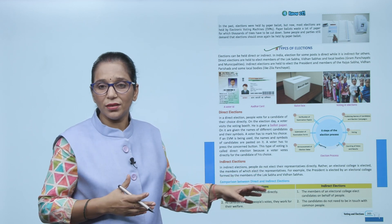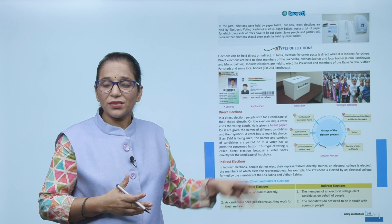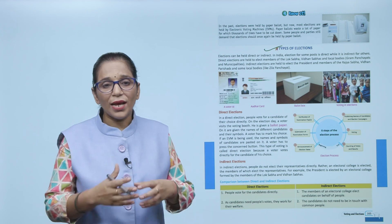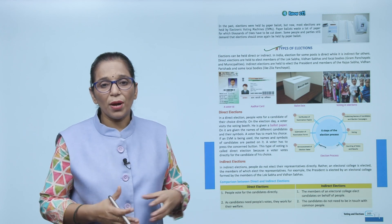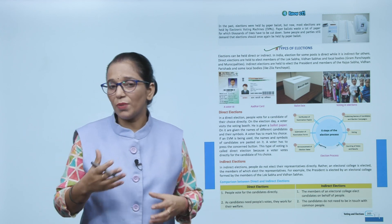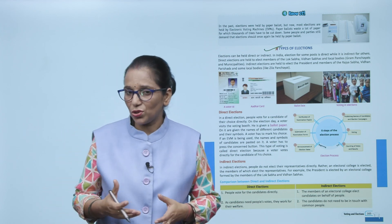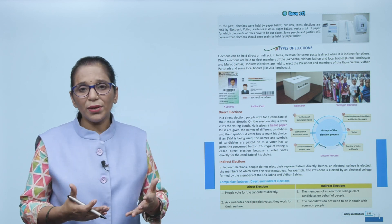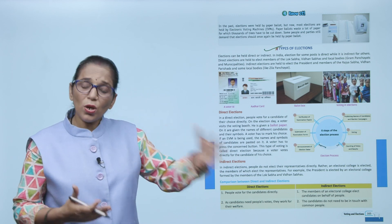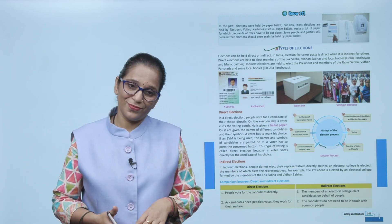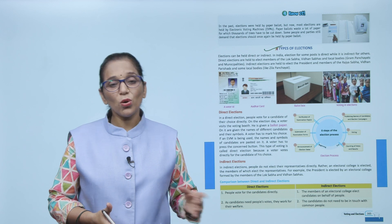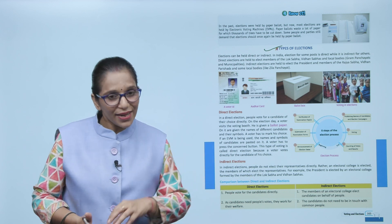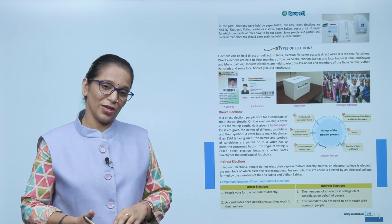The electoral college is the group which elects the representative. For example, the President's electoral college is formed by members of Lok Sabha and Vidhan Parishad — we have chosen them and they are going to vote. So that is indirect election.